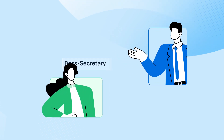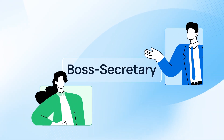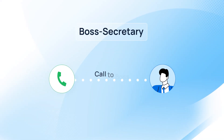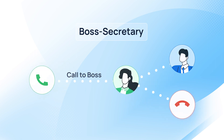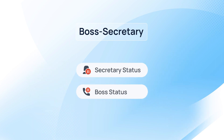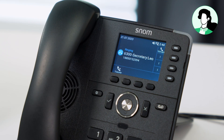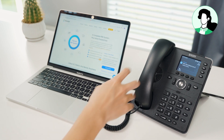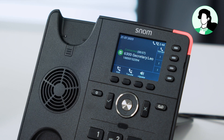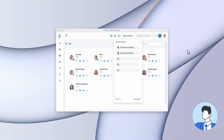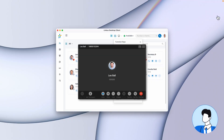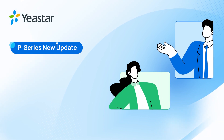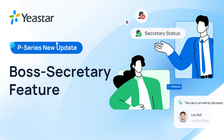Yeastar P-Series PBX now supports the Boss Secretary feature, which allows secretaries to screen incoming calls for the boss and show each other's availability. We can use either IP phones, Linkus Web, and desktop client to realize all operations for each role, no matter what devices are being used. In this video, we will talk about how to set up the Boss Secretary feature in P-Series PBX.